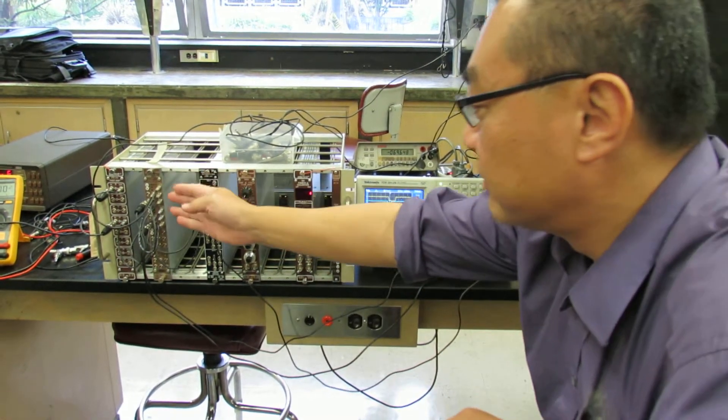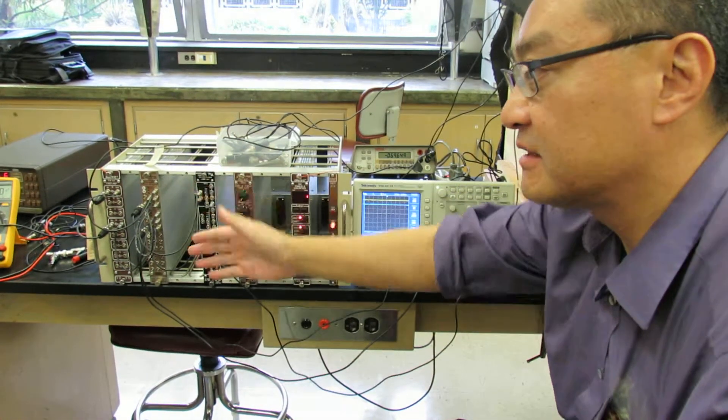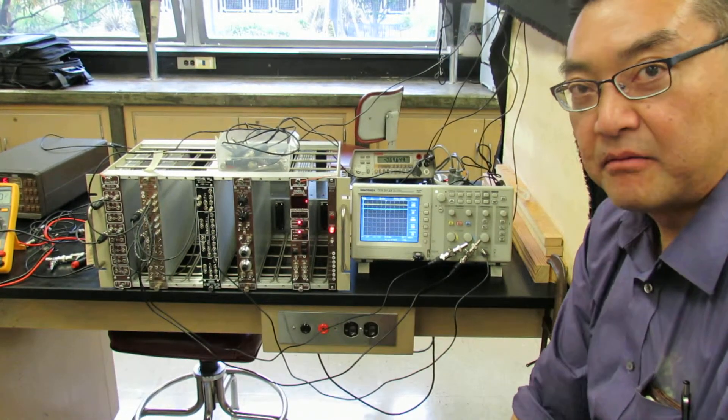And the singles counts will vary dramatically as you change the voltage, you see? So that's why it's best to keep the voltage fixed, measure your singles count, and then do the number more appropriately.